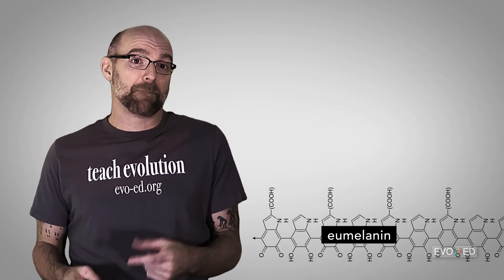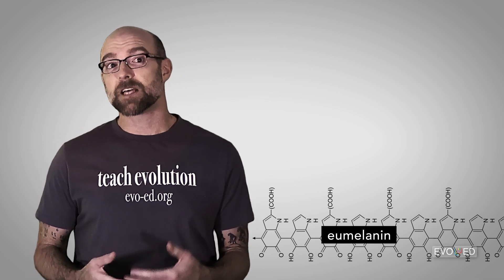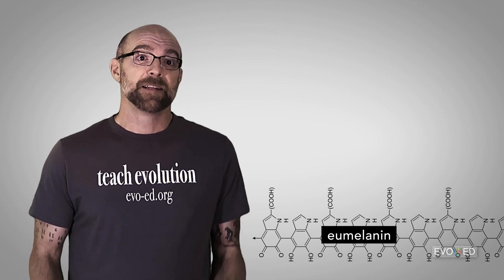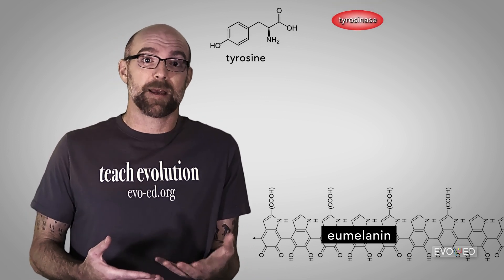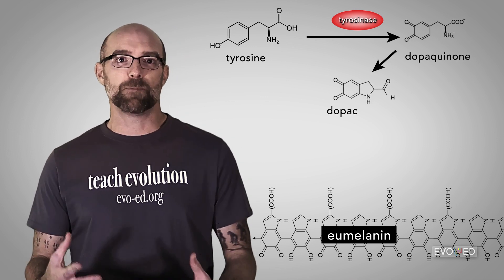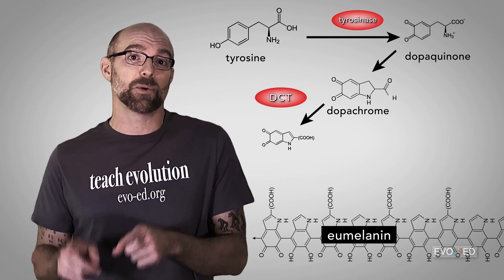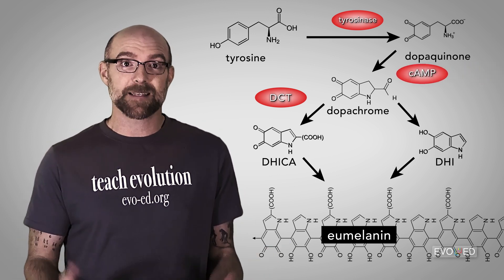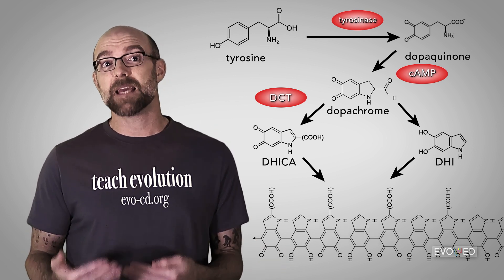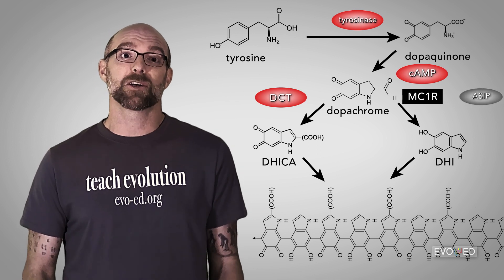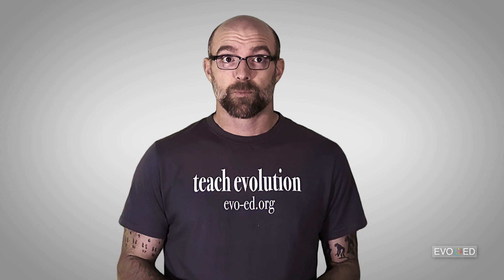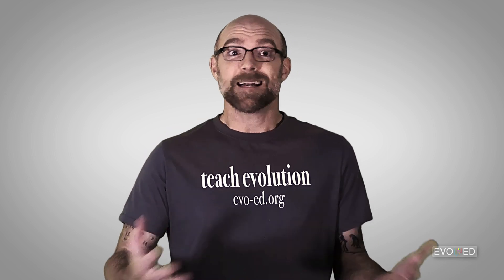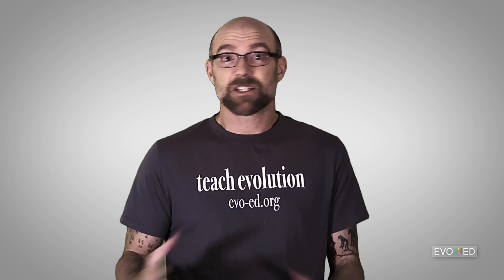Let's recap. Eumelanin is the dark pigment that melanocyte cells in our skin can produce, and we've looked at four key proteins that impact its production. Tyrosinase interacts with tyrosine and converts it into a precursor of eumelanin. Dopachrome tautomerase, or DCT, helps generate DHICA, also a precursor of eumelanin. The molecule cAMP is needed for the whole process, and cAMP can only be produced in abundance if the MC1R protein is functioning and the agouti signaling protein doesn't block it. So eumelanin production depends on fully functioning tyrosinase, DCT, MC1R, and an agouti signaling protein that isn't sabotaging the system.